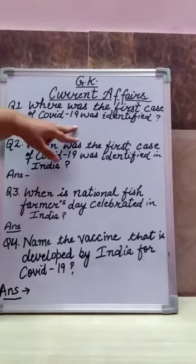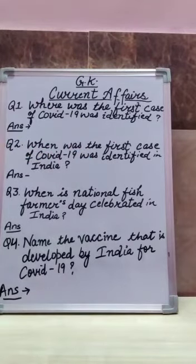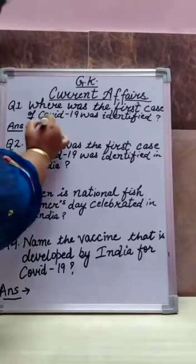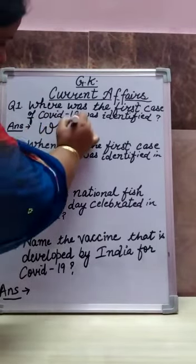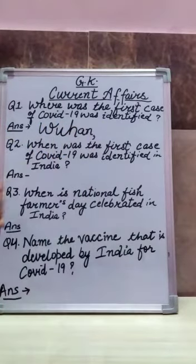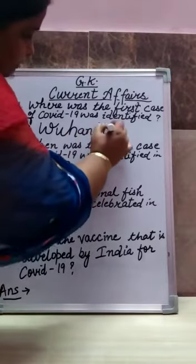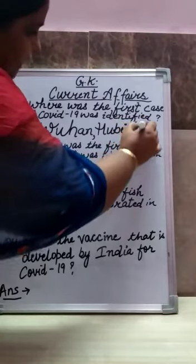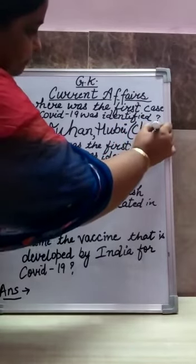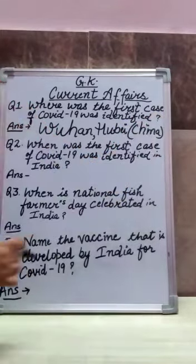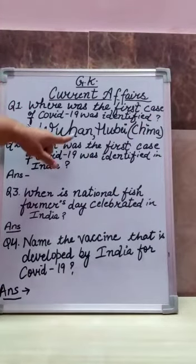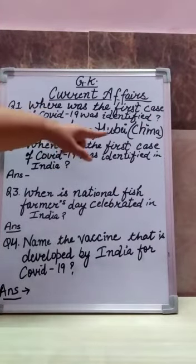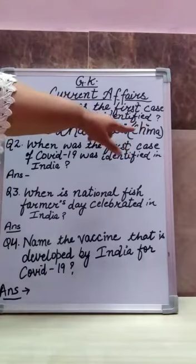Where was COVID-19 first identified? Any guesses? Dubai? China? Your answer is Wuhan, in China.